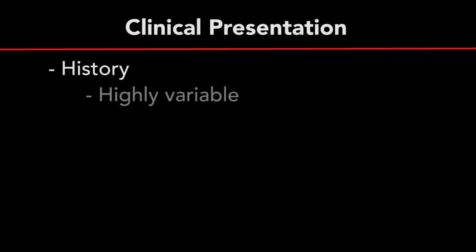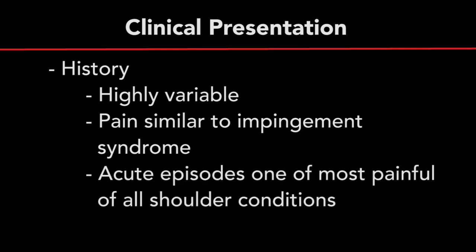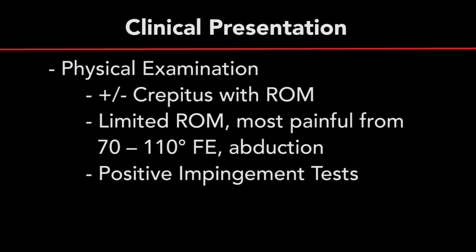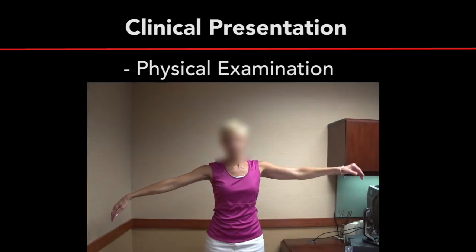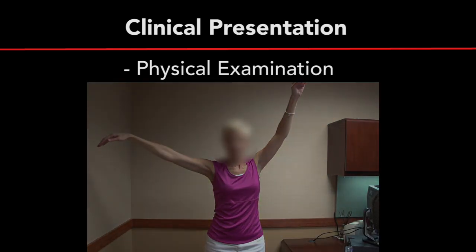The clinical presentation of calcific tendinitis is often variable. Greater than 50 percent of patients are asymptomatic. If symptomatic, patients often complain of intermittent episodes of pain, similar to that of impingement syndrome. Acute episodes may be one of the most painful of all shoulder conditions. On examination, patients will often demonstrate a decreased arc of motion, most painful between 70 and 110 degrees of forward elevation and abduction, with positive subacromial impingement signs.